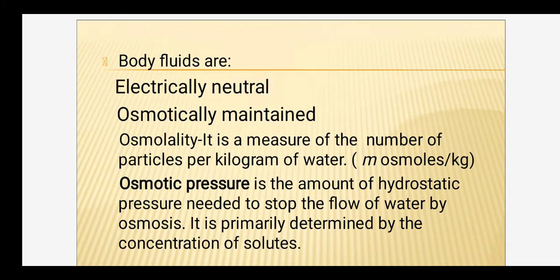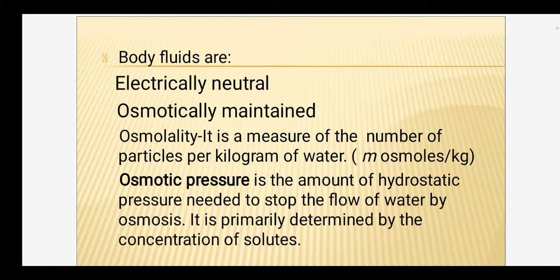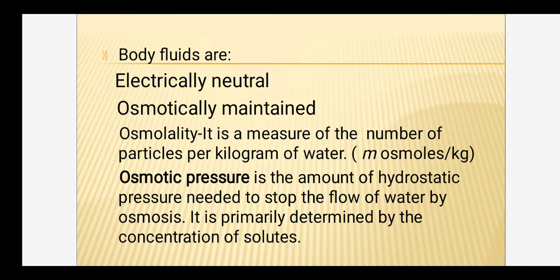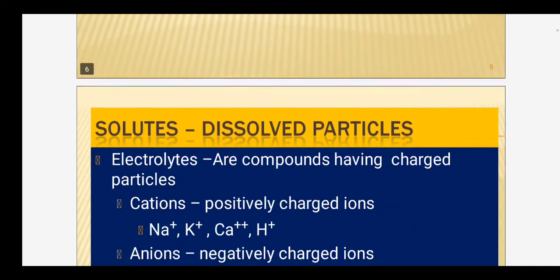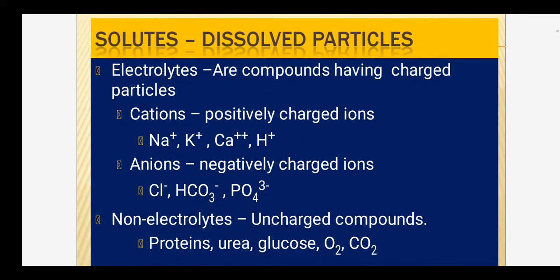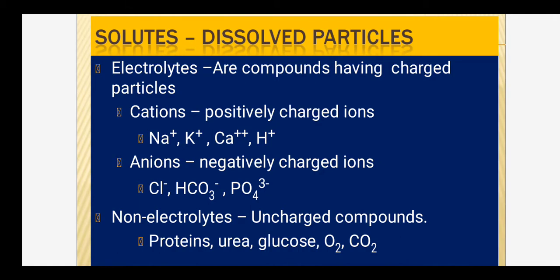Now, the fluids or water are electrically neutral in the body and osmotically maintained — that means osmotic pressure is maintained. Osmotic pressure is the amount of hydrostatic pressure needed to stop the flow of water by osmosis. It is primarily determined by the concentration of the solutes present in the body fluids.